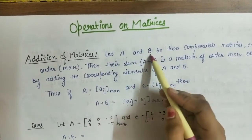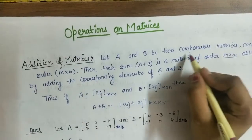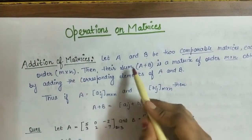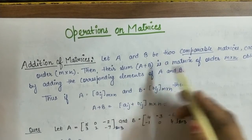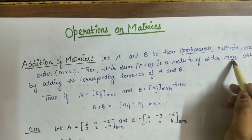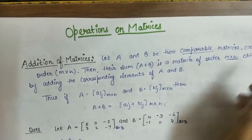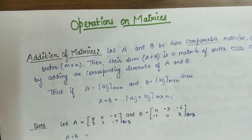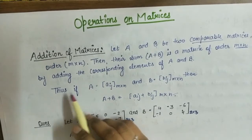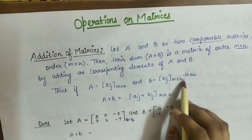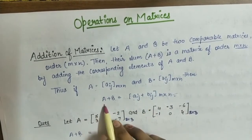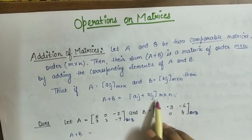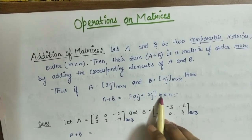Let A and B be two comparable matrices, each of order M×N. Then their sum A+B is a matrix of order M×N obtained by adding the corresponding elements of A and B. Thus, if A and B are matrices, then A+B equals [A_ij + B_ij] of order M×N.